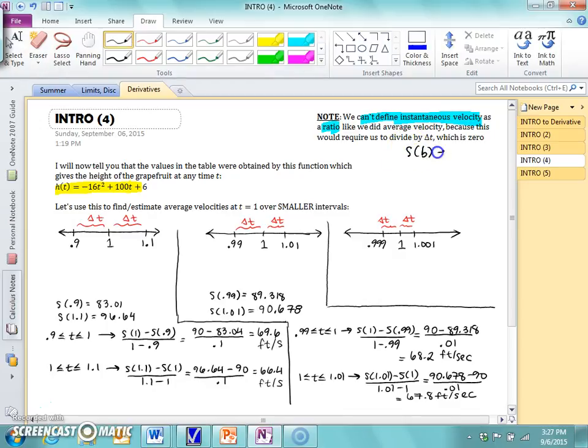So remember, average velocity was this. And average velocity, there is a change in time. For instantaneous velocity, this change in time would be 0, and you can't divide by 0.